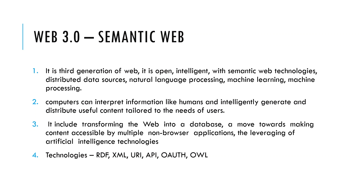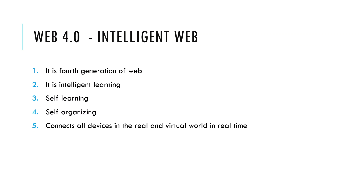Web 3.0 moves towards making content accessible by multiple non-browser applications, leveraging artificial intelligence. Technologies involved include RDF, XML, URI, API, OWL, and others. The fourth generation is the Intelligent Web, where the web learns very intelligently — it is a kind of self-learning, self-organization that connects all devices in real time.